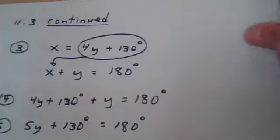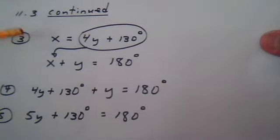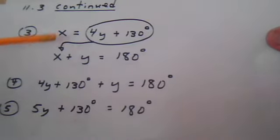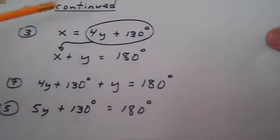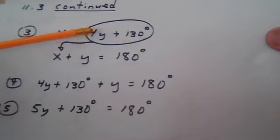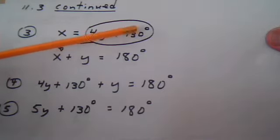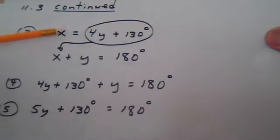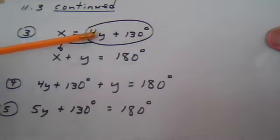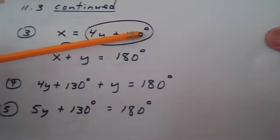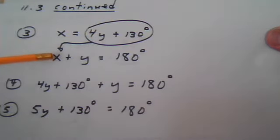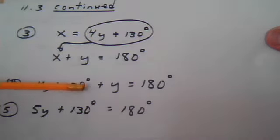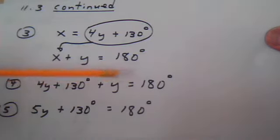Now notice, I wrote the two equations again. And what I'm going to do is I'm going to replace this X by this. It says that X equals 4Y plus 130 degrees. So wherever there's an X, you could put 4Y plus 130 degrees. So you replace this X with this quantity. You put it here. Notice that's this one here. The Y is still there. The 180 is still there. The equal is still there.